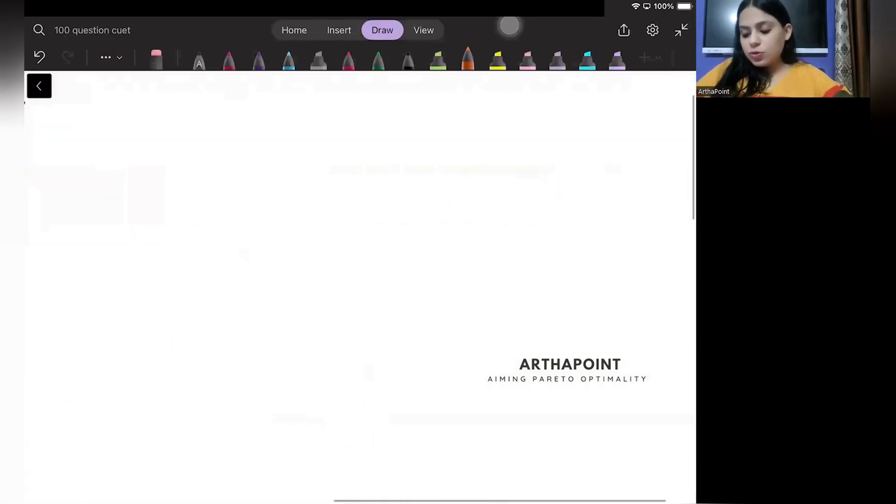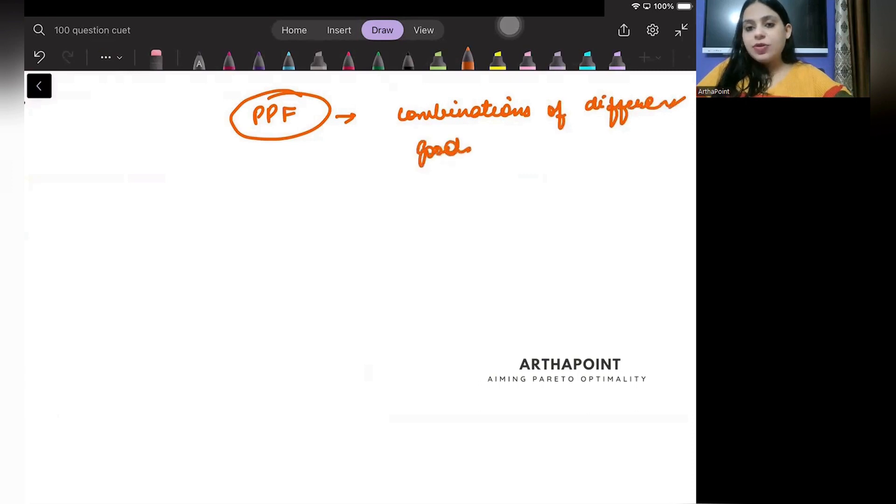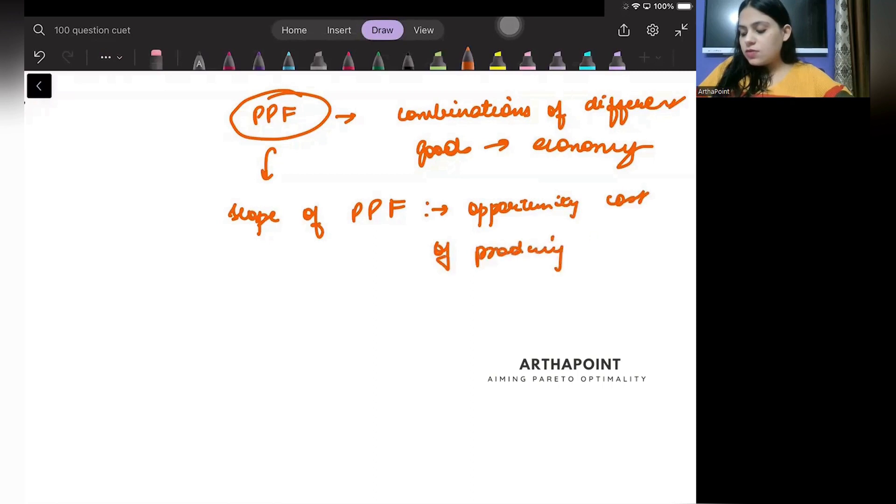So beta, what do we know about PPF? A production possibility frontier gives us combinations of different goods that can be produced in the economy. Now, we know that the slope of a production possibility frontier is the opportunity cost of producing one good against another.